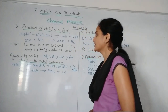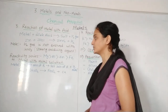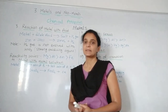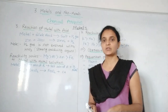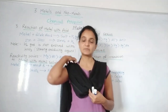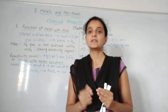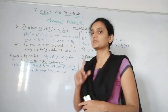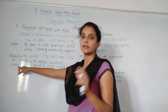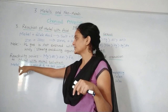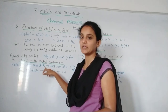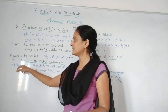The next property is metal reacting with a metal salt solution. When one metal reacts with the salt solution of another metal, a new reaction occurs. We have already seen this in our first chapter — the displacement reaction — where the more reactive metal displaces the less reactive metal. So if metal A reacts with the salt solution of metal B, and metal B is less reactive, then B is displaced by A.